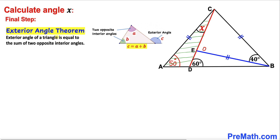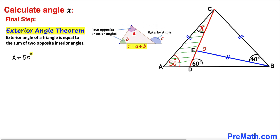And here's our final step. Let's recall the exterior angle theorem: the exterior angle of a triangle is equal to the sum of two opposite interior angles. As you can see in this diagram, A and B are our two opposite interior angles, whereas C is our exterior angle, such that C equals A plus B. In our case, this 60 degrees is our exterior angle, whereas 50 degrees and angle X are our opposite interior angles. Therefore we can write X plus 50 degrees must be equal to 60 degrees.